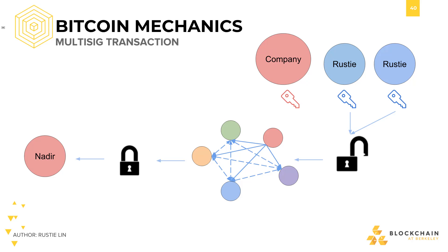Some exchanges and software wallet companies provide 2 of 3 or 3 of 5 multi-sig services. In the 2 of 3 multi-sig case, you keep two of your keys and a trusted third party such as the company holds the third. The exchange can't use your funds since they only have one key, but if you ever lose one of your keys, the company can step in and offer their key to help you recover your funds. And as you can imagine, this works similarly for 3 of 5 or any other m of n multi-sig.